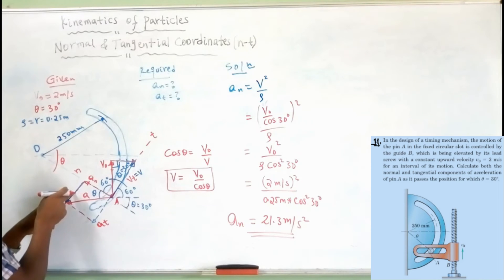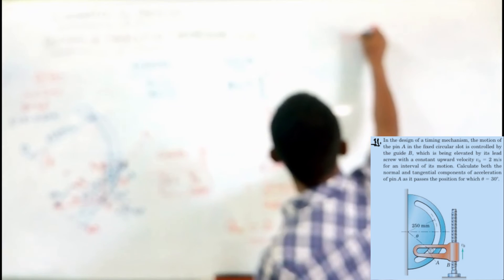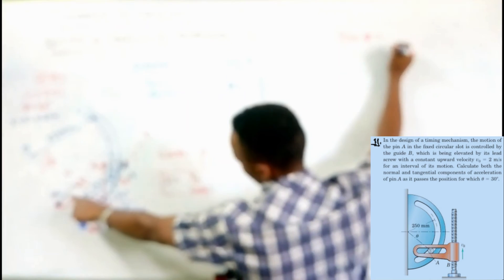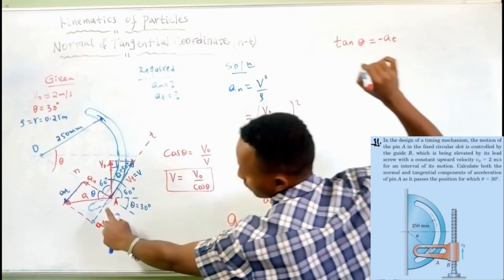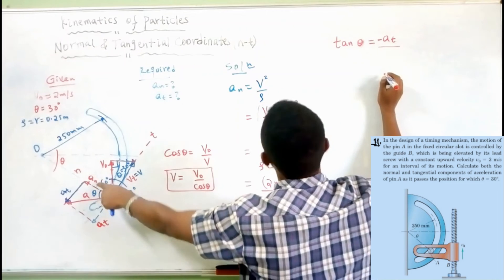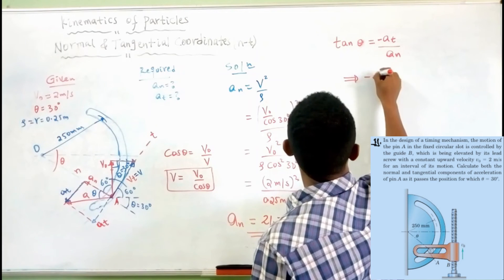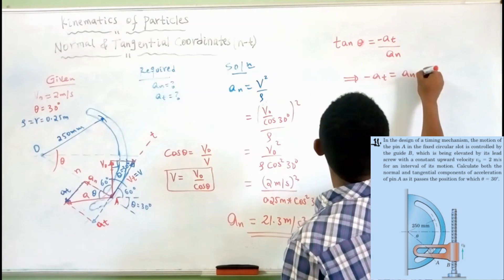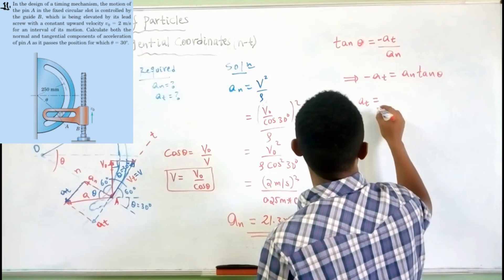The angle is opposite to the adjacent side. To determine the tangential acceleration, we can use tan. The tangential is in the negative direction. Tangential positive direction versus negative direction — you can see negative result. From this, A tangential equals A_N times tan(theta).